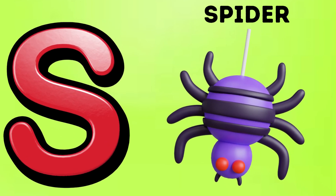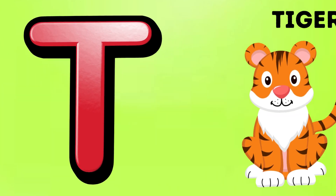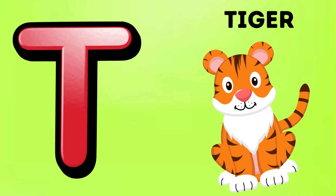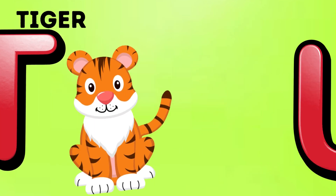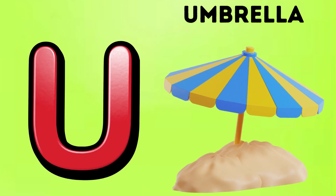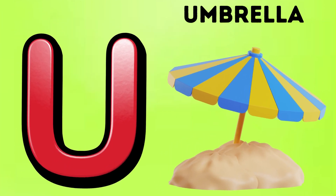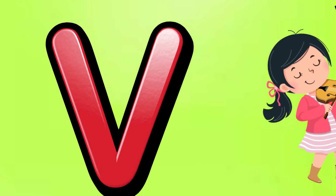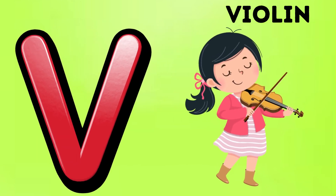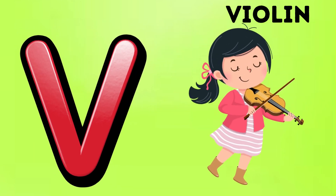S is for Spider. Sh, Sh. Spider. T is for Tiger. Da, Da. Tiger. U is for Umbrella. U. Umbrella.